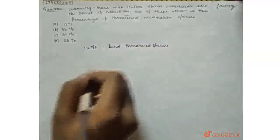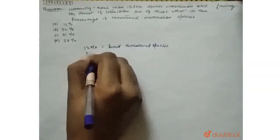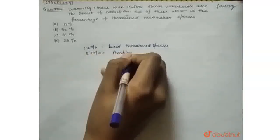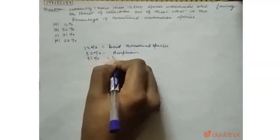12% of all the birds are threatened, and 32% is amphibian, and 31% of gymnosperm.